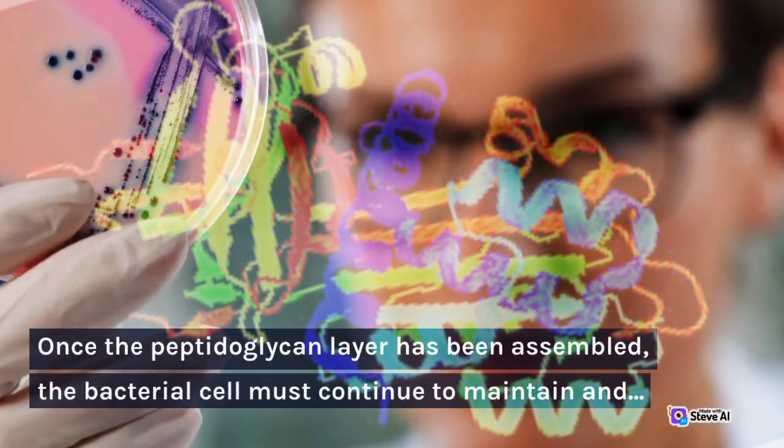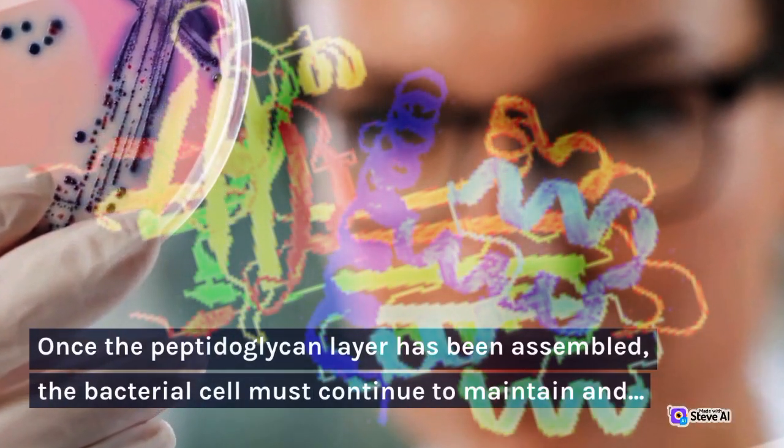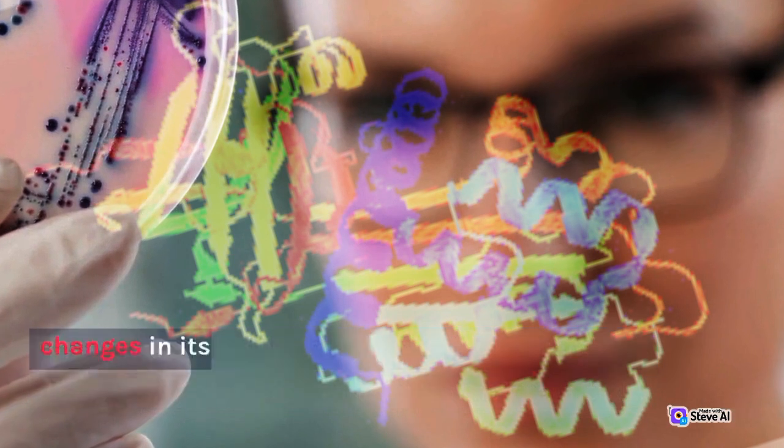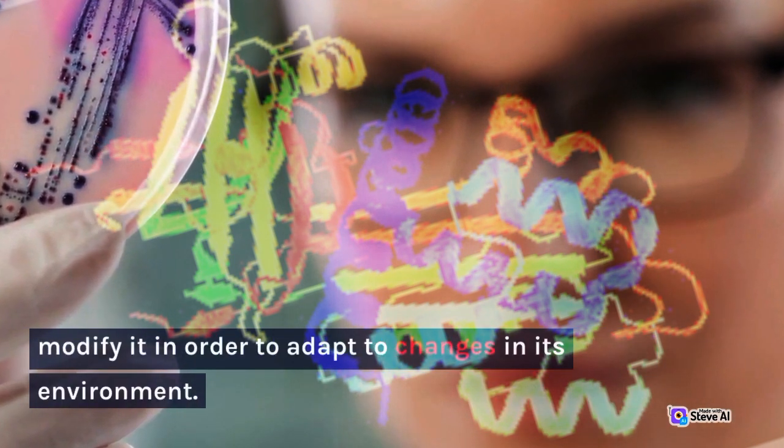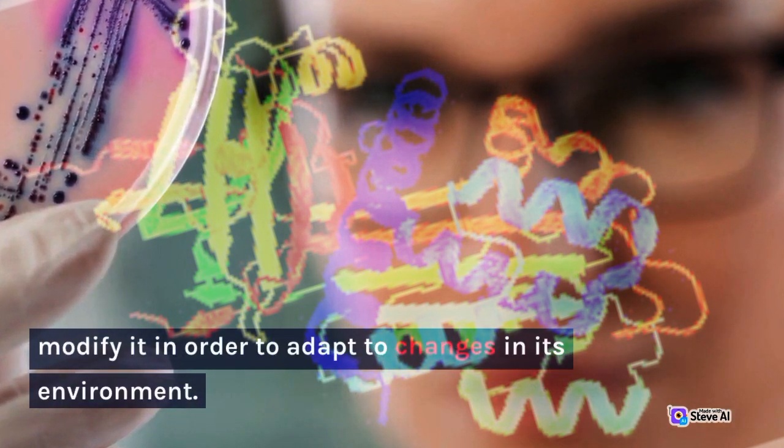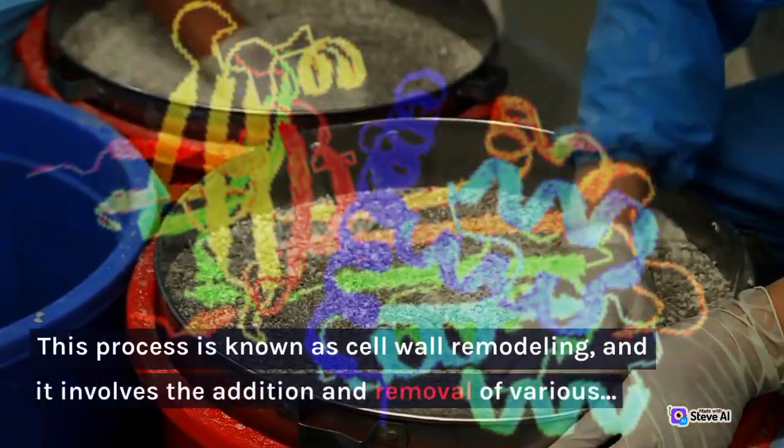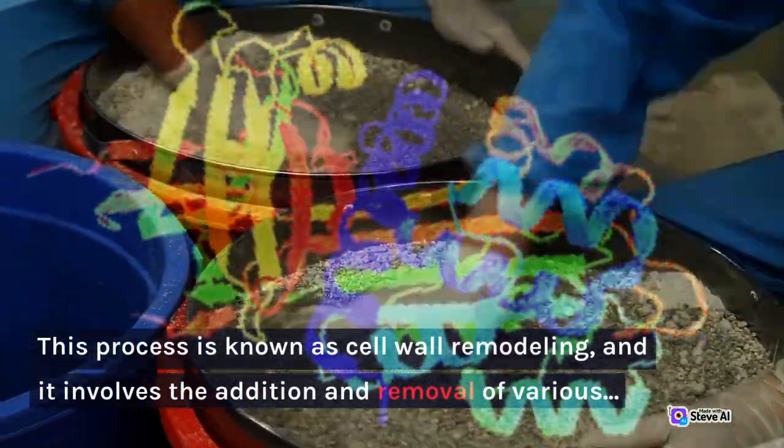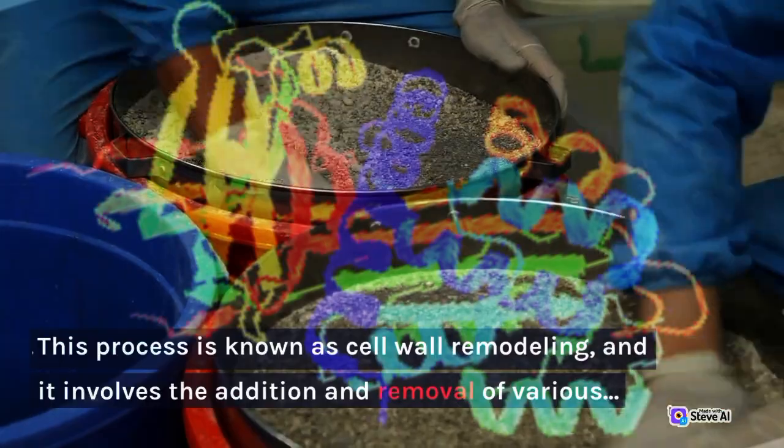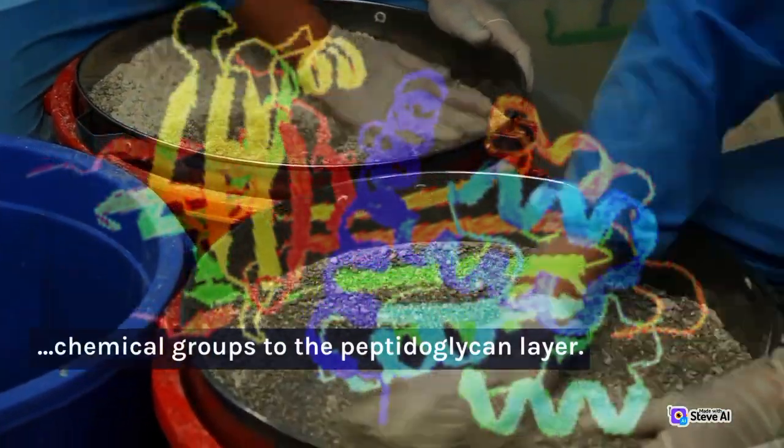Once the peptidoglycan layer has been assembled, the bacterial cell must continue to maintain and modify it in order to adapt to changes in its environment. This process is known as cell wall remodeling, and it involves the addition and removal of various chemical groups to the peptidoglycan layer.